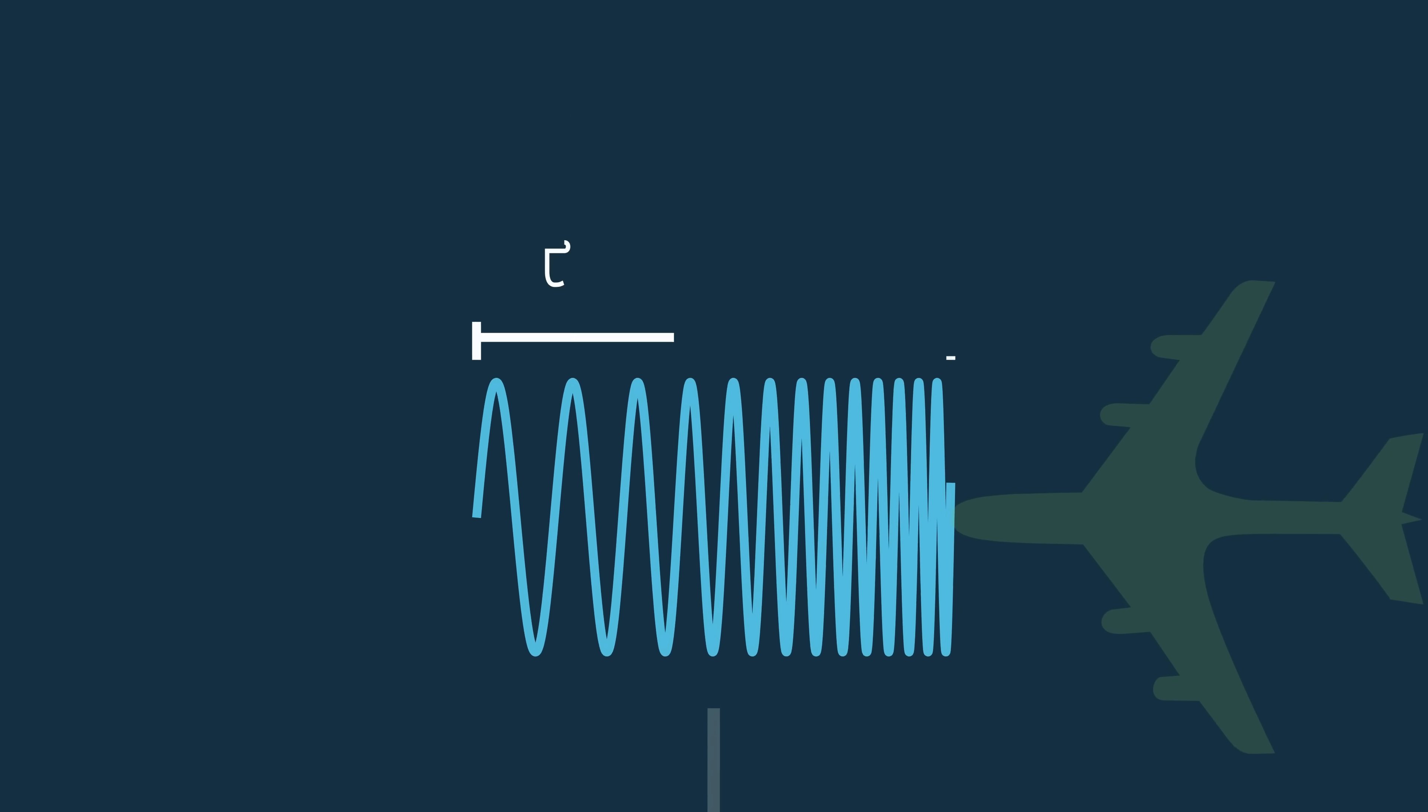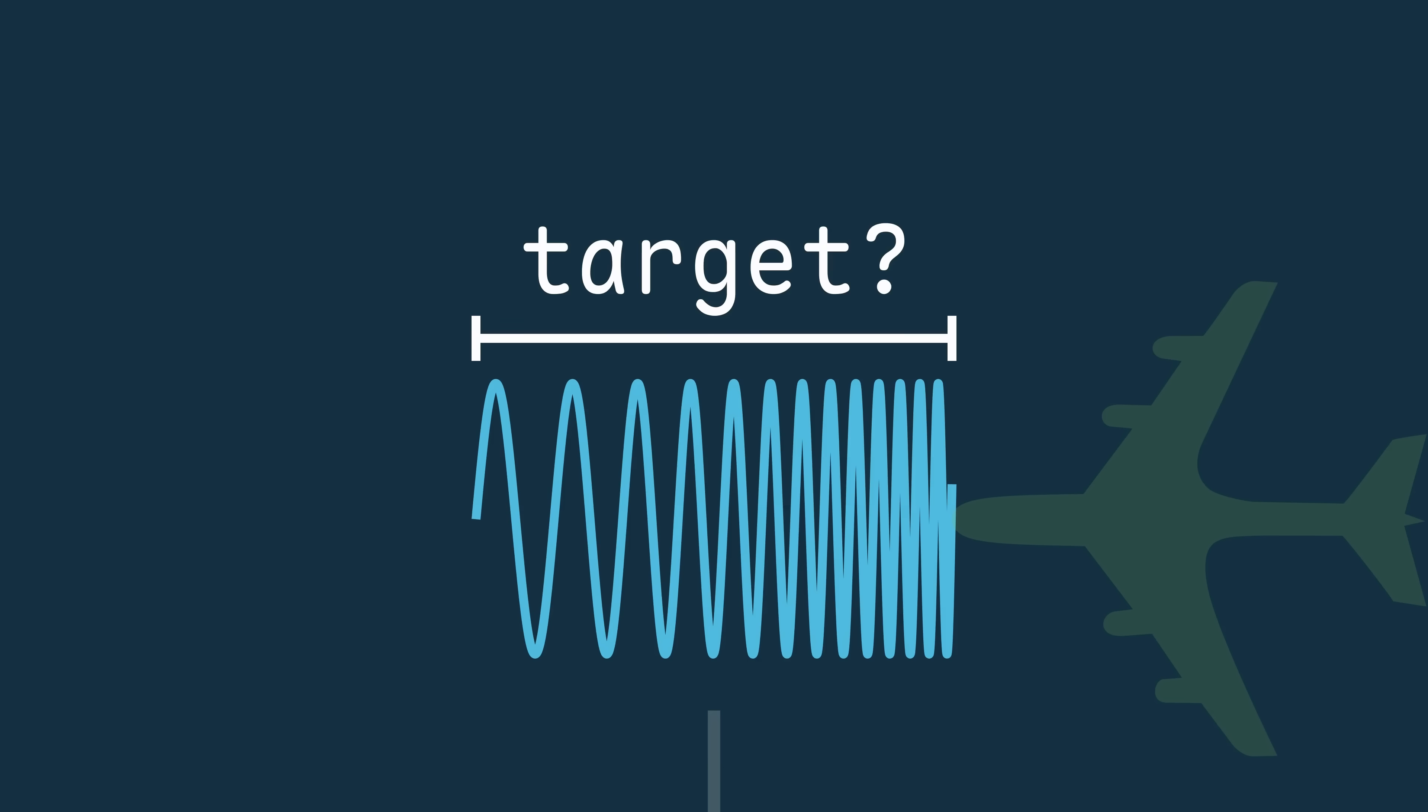Remember that previously the target could have corresponded to a range anywhere within this pulse width, so the range resolution was dependent on how far the signal traveled during the pulse width tau, or the speed of light times the pulse width over 2.